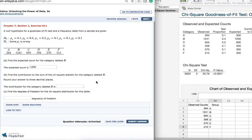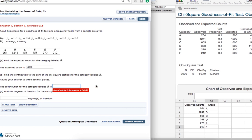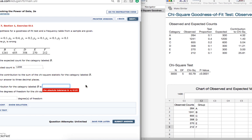Part B, find the contribution to the sum of chi-square statistic for the category labeled B. Round your answer to three decimal places. In our Minitab Express output, we have 1.40.